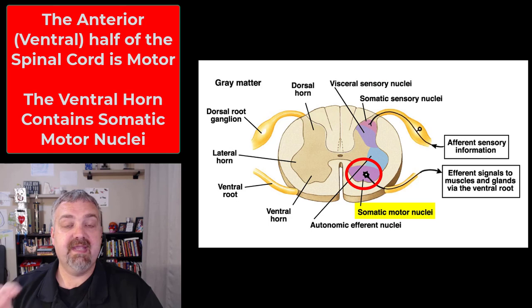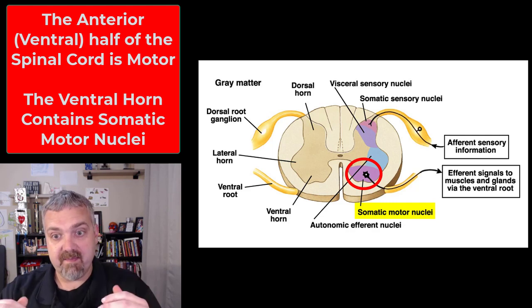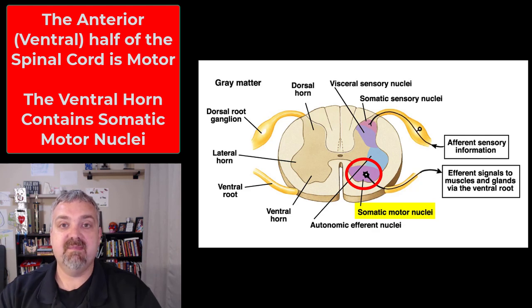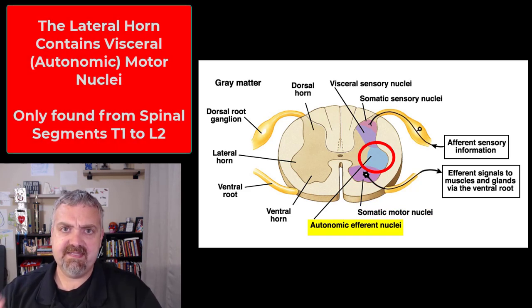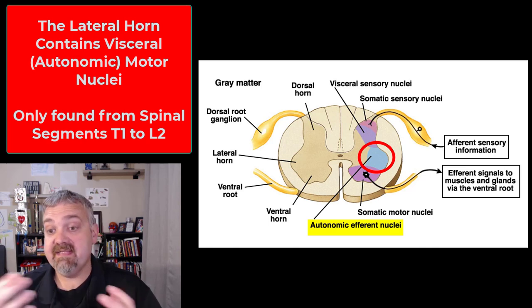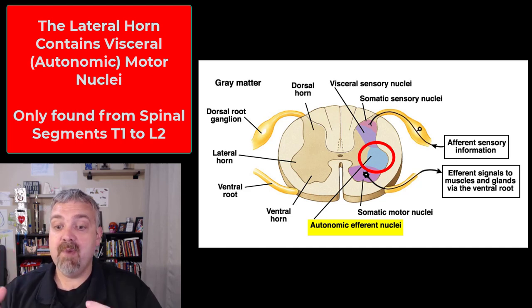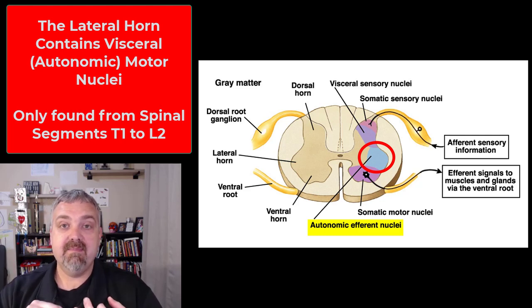The anterior gray horn is going to be where your somatic motor nuclei are. Information is going to travel down from the brain on the anterior half of the spinal cord, reach the somatic motor nuclei there, and then control whatever muscle or organ it needs to — that would be the muscles with somatic motor. The lateral gray horn on the side is going to be only found in the thoracic and lumbar spine from T1 to L2, the same place your sympathetic nervous system is. This is going to be visceral motor nuclei, or autonomic efferent nuclei, so it's going to control your cardiac muscles, smooth muscle, glands, and fat.